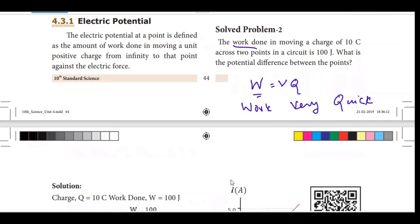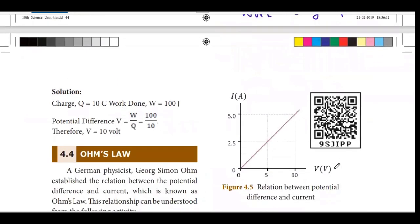Now we know the work done. The work done is equal to vq formula. Use the work done across the two points. This is q, and this is w. Now we know the work done is equal to vq. This vq unit will be used to produce half mark. This is problem 2.